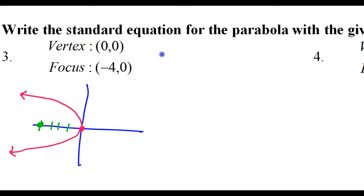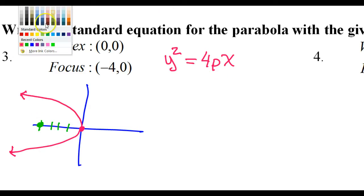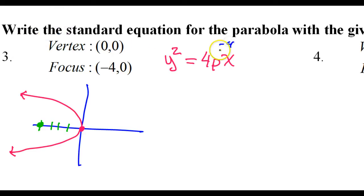Because it's got to wrap around that focus. The fact that it is facing to the left means that the y is squared. So we've got a y² = 4px situation. Because the vertex is (0, 0), I knew it would just be y² and x and not y plus 3 or something like that. So we just need to know what 4p is. The p is negative 4.